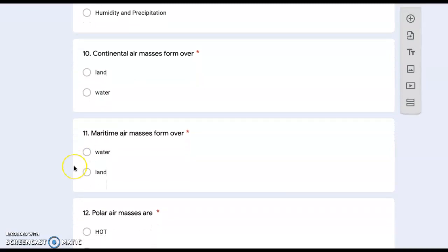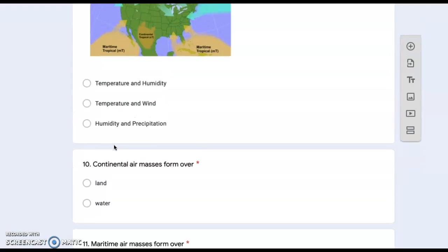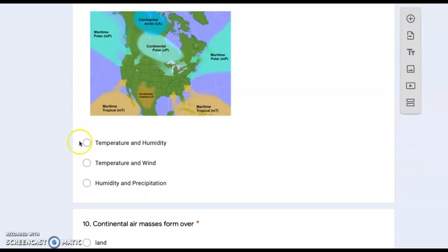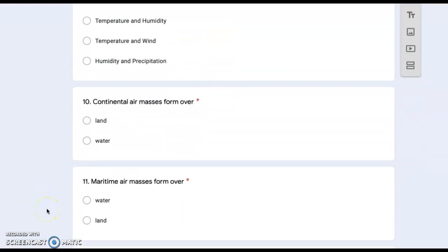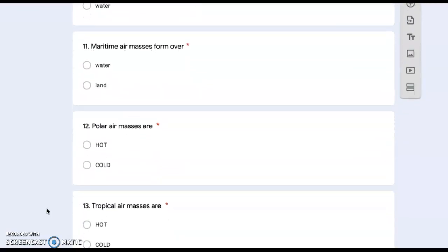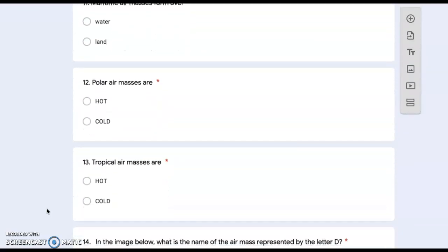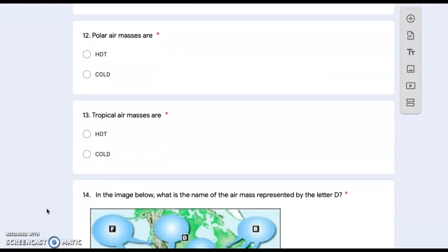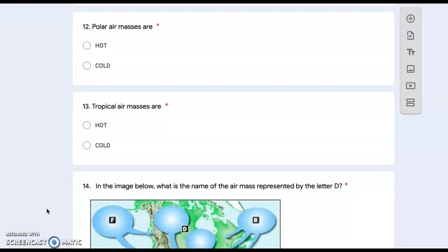Number eleven: maritime air masses form over water or land? Again, use the diagram in number nine to help you answer that question. Number twelve: polar air masses are hot or cold? Number thirteen: tropical air masses are hot or cold?